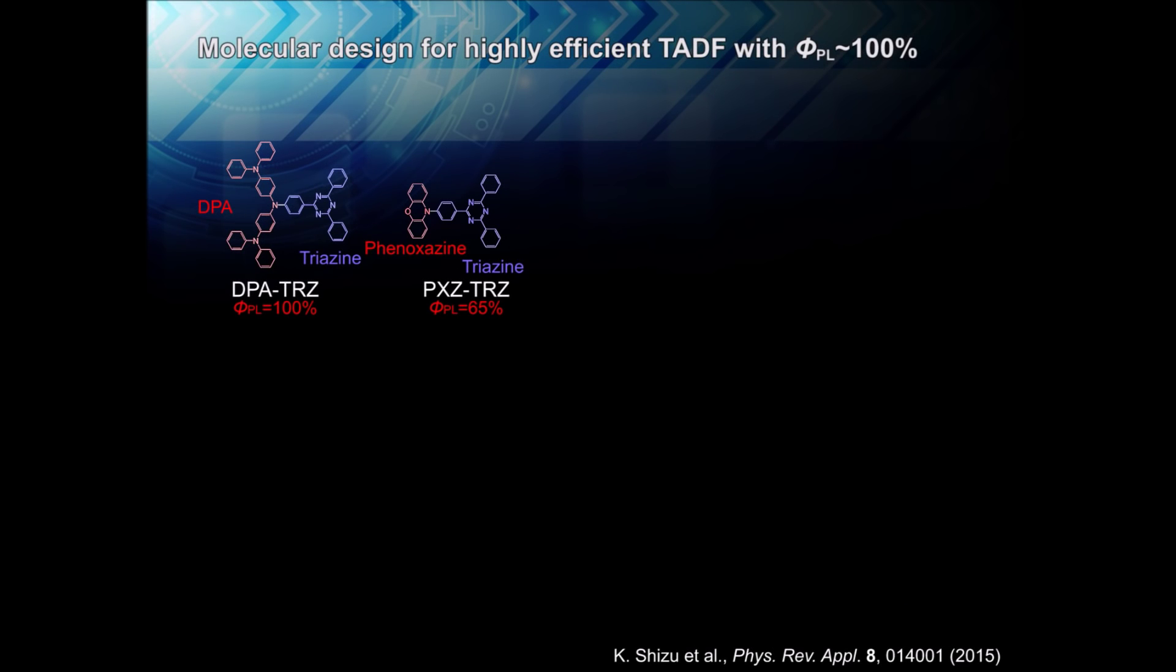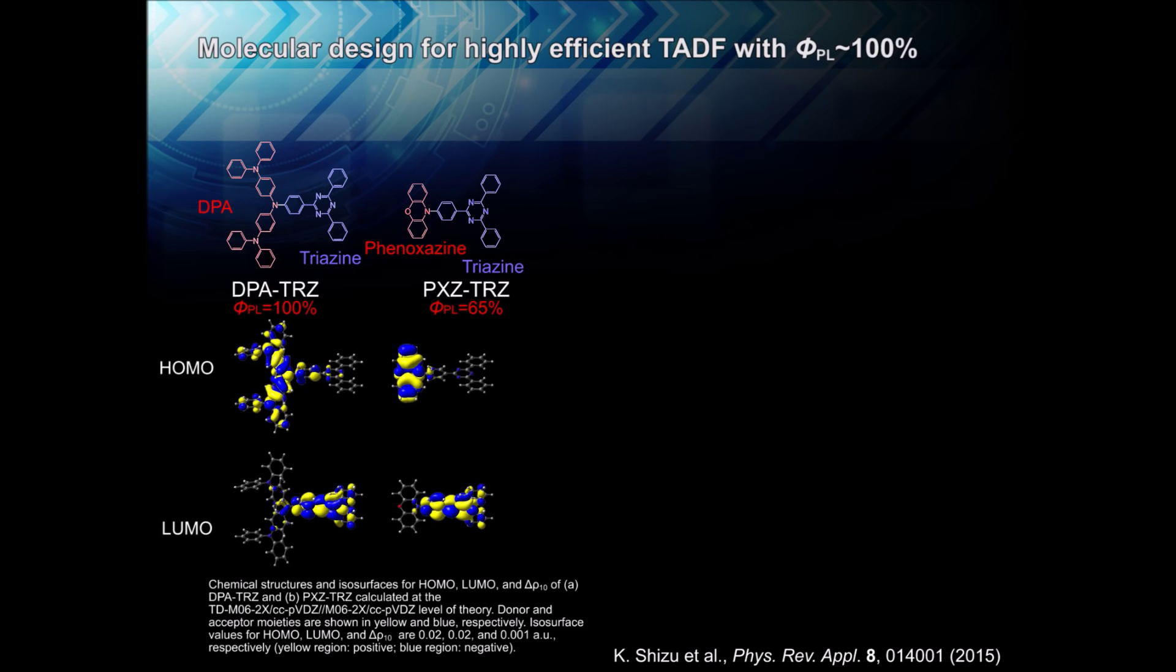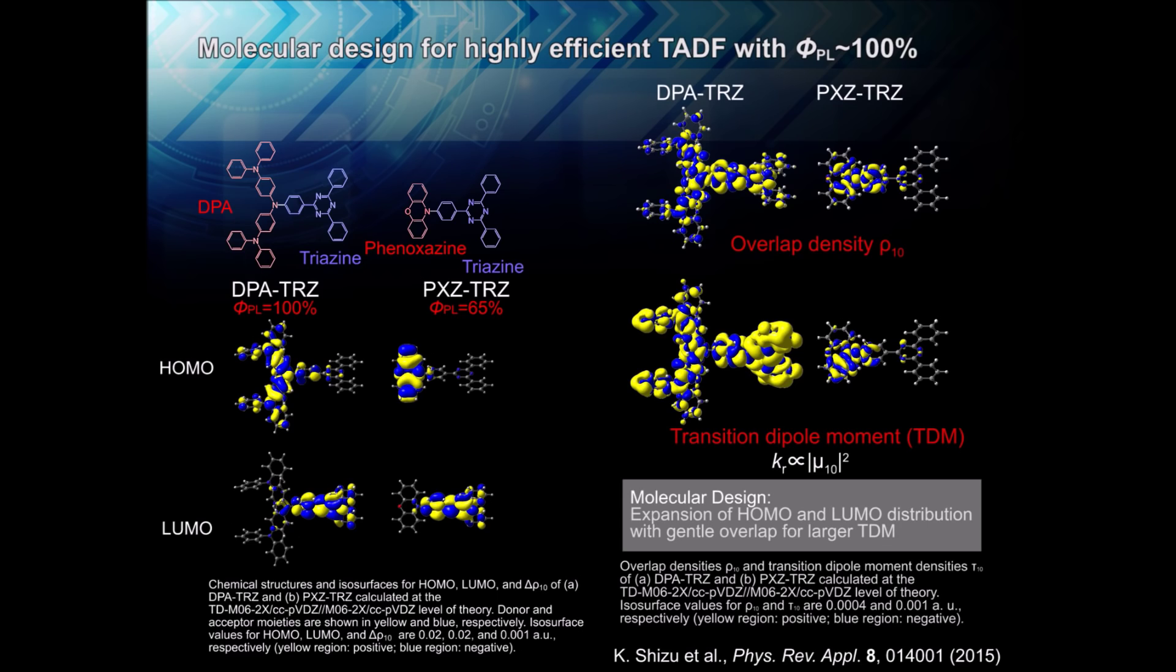Based on quantum chemical calculations, the molecular design strategy has been refined to realize compatibility between small delta EST and large oscillator strength. This is accomplished by extending the HOMO and LUMO over a larger volume, which allows orbital overlap, and thus oscillator strength, to be increased without significantly raising delta EST.